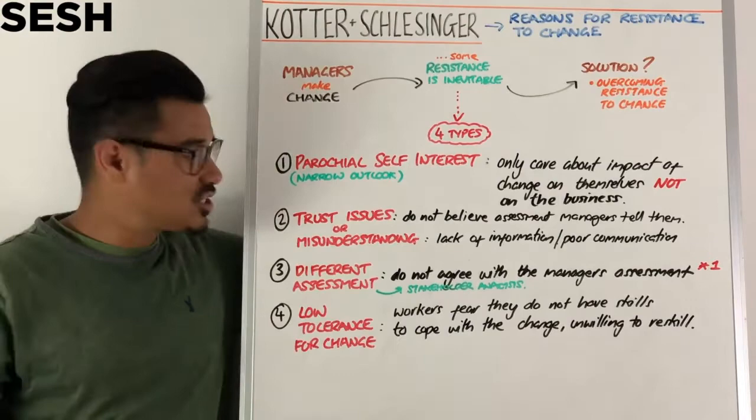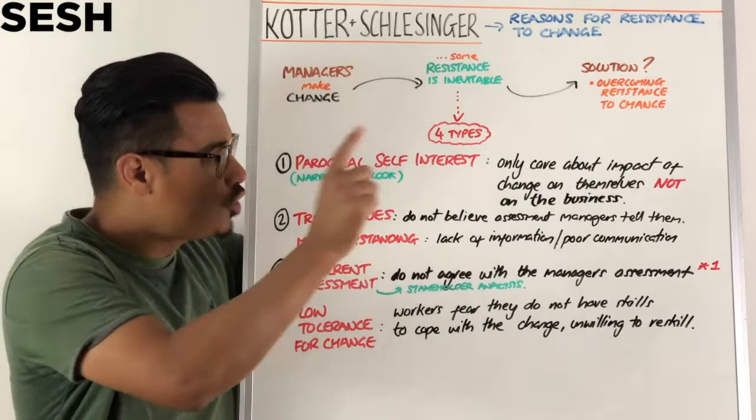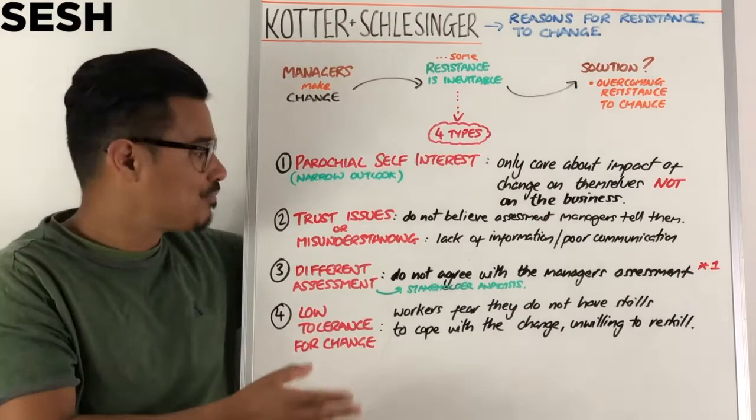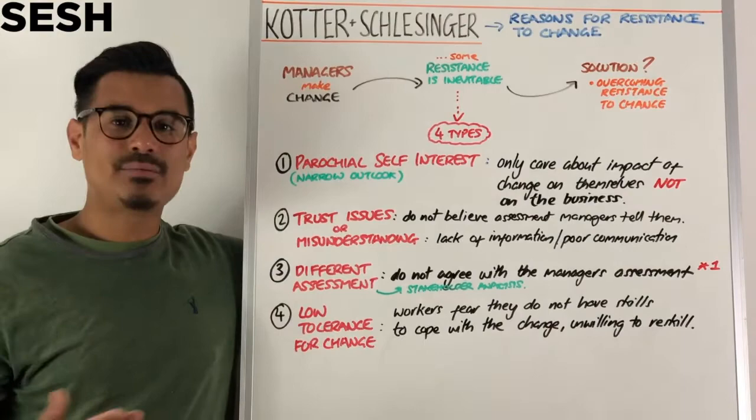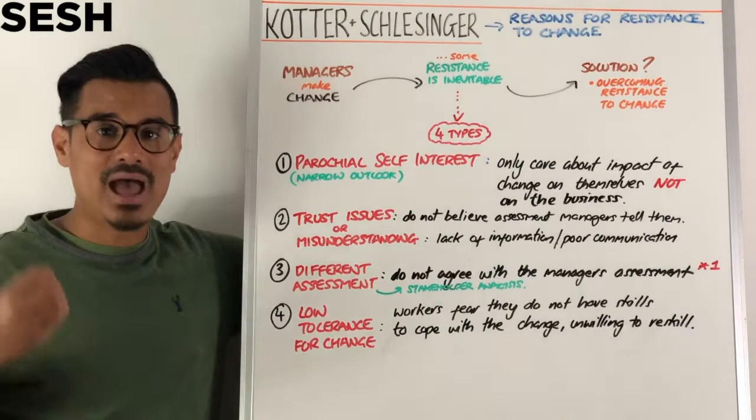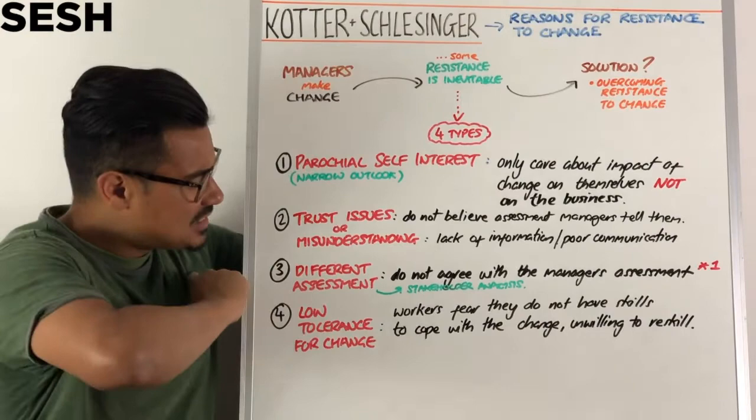Number two is trust issues, or there might be a misunderstanding of the communication. Trust issues means employees do not believe the assessment that managers tell them — because of previous trust issues, for example. A misunderstanding falls into the same category, which is the idea that there is a lack of communication, or poor communication, in how the change has been informed to the employees.